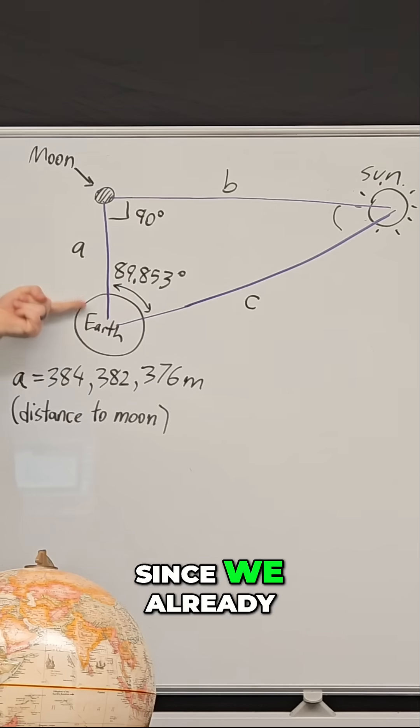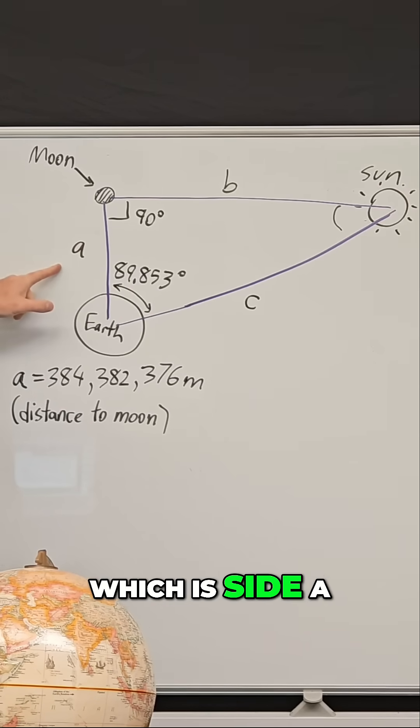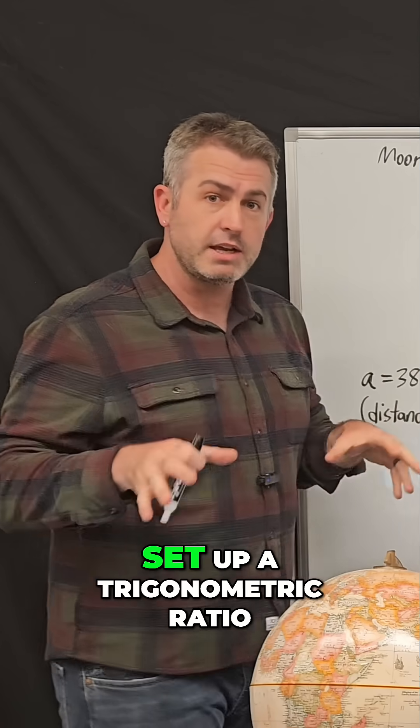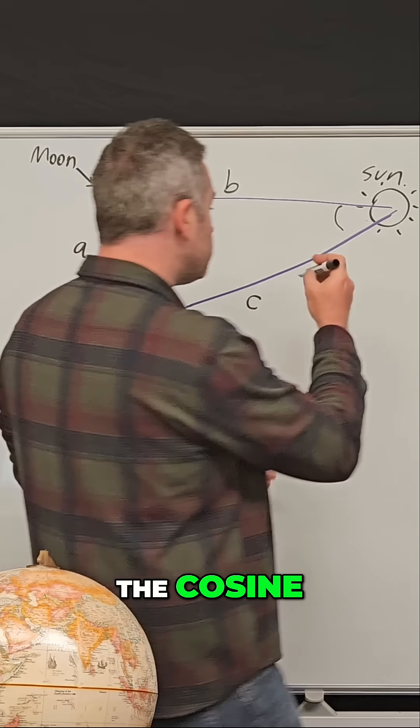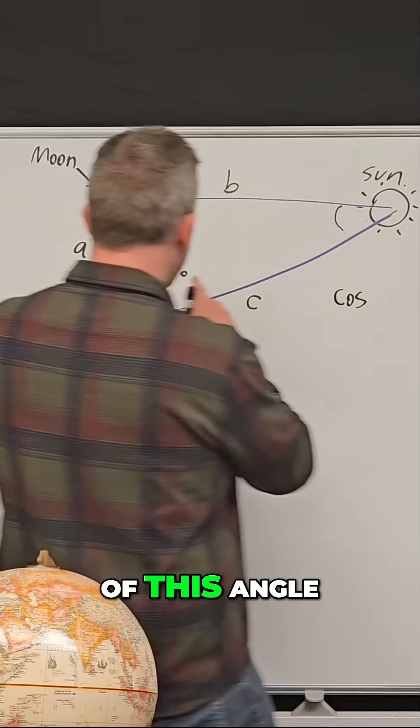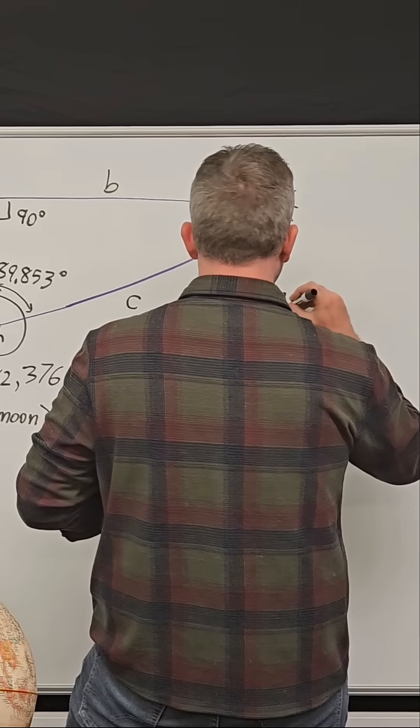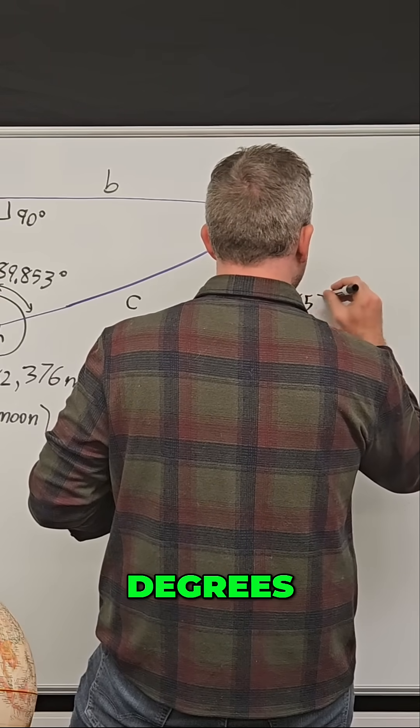Once we measure that angle, and since we already know the distance to the moon, which is side A on our triangle, we can set up a trigonometric ratio. We're gonna use trigonometry and we're gonna say the cosine of this angle, so the cosine of 89.853 degrees